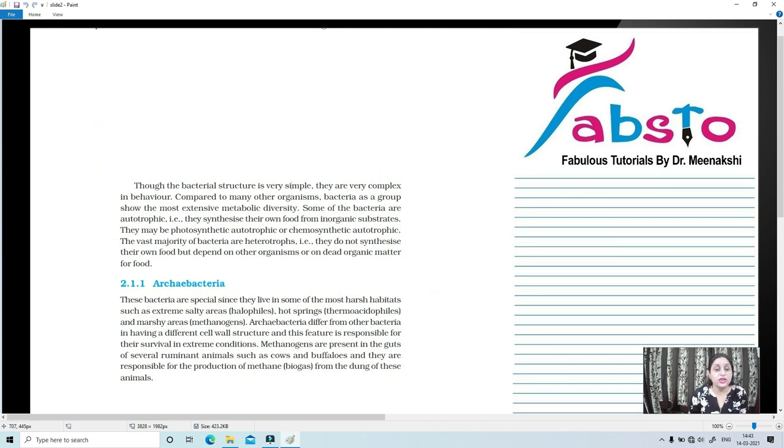Though the bacterial structure is very simple, they are very simple in structure, but they are very complex in behavior. They have a very complex behavior. When compared to other organisms, bacteria as a group show the most extensive metabolic diversity. That means their metabolism, what is metabolism? Sum total of all the chemical reactions that are taking place in the body. So, bacteria are very complex in terms of their metabolism, although their structure is very simple.